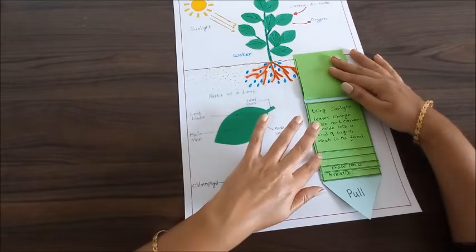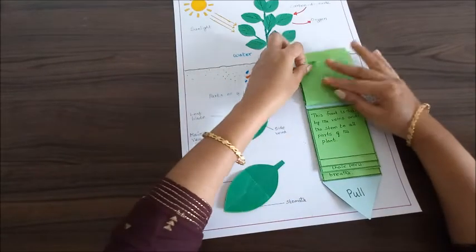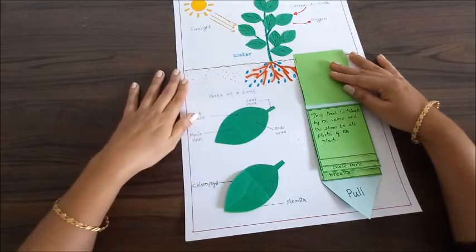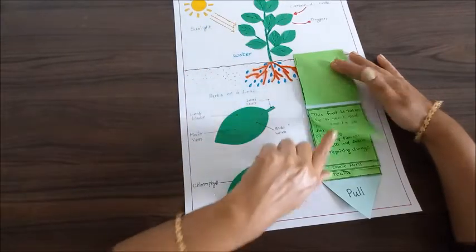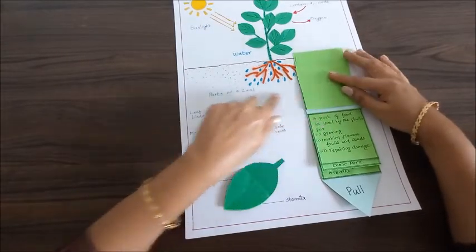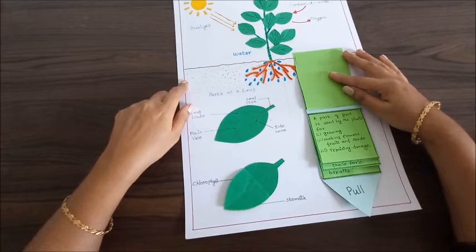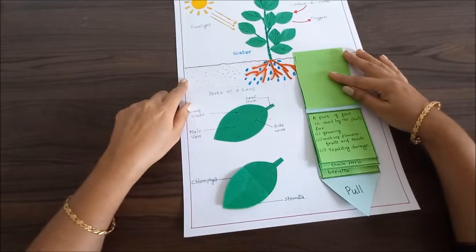Now this food is taken by the veins and the stem to all parts of the plant. A part of the food is used by the plants for growing and making flowers, fruits, and seeds.